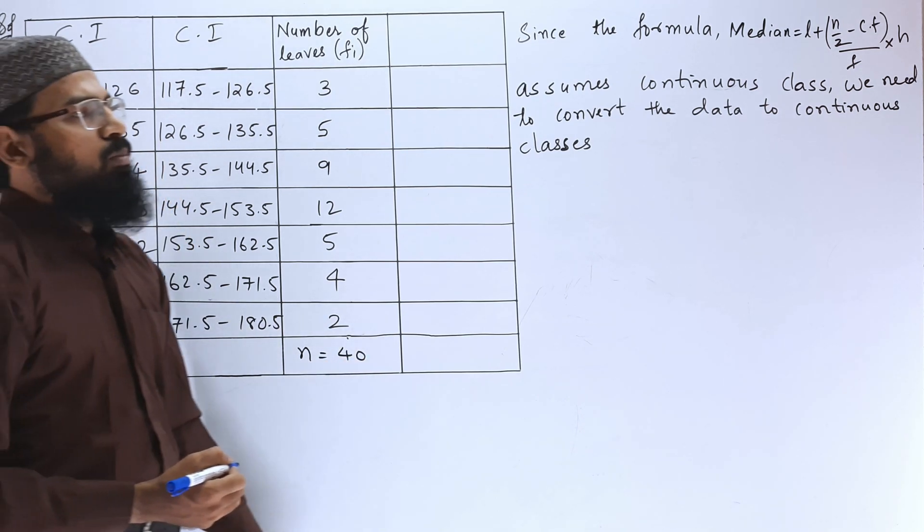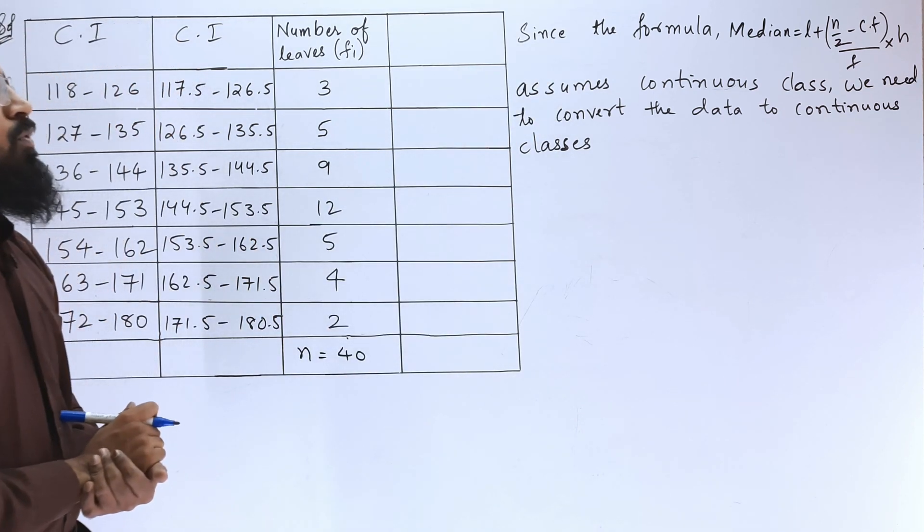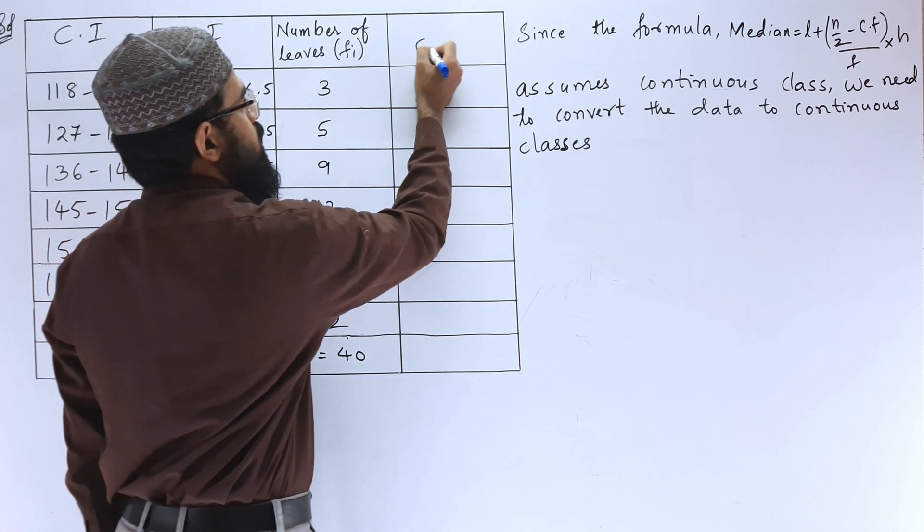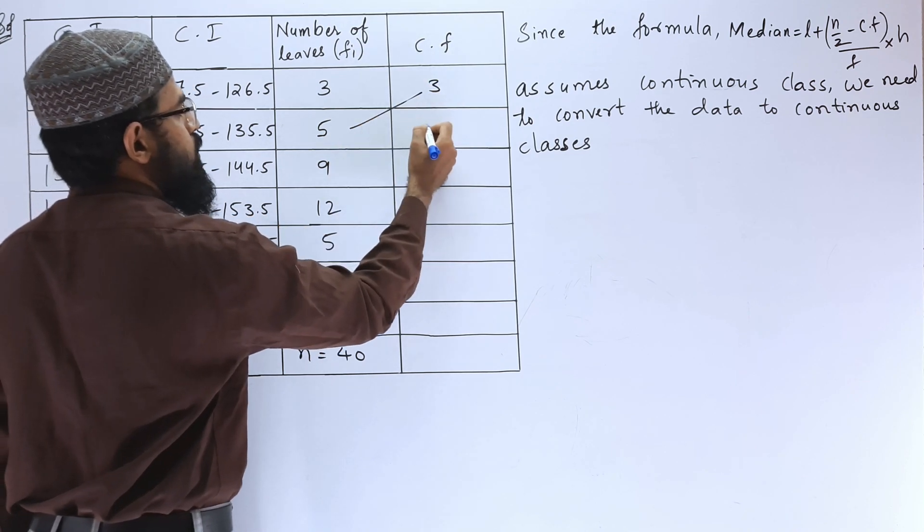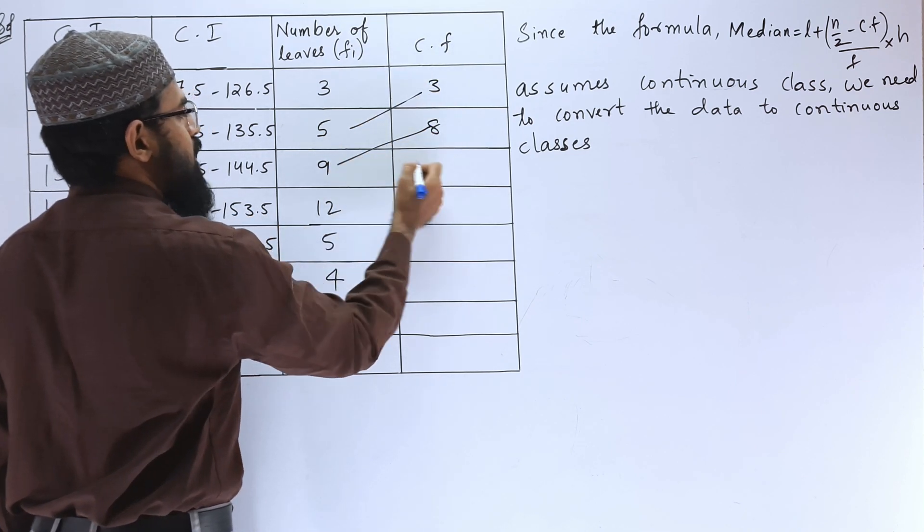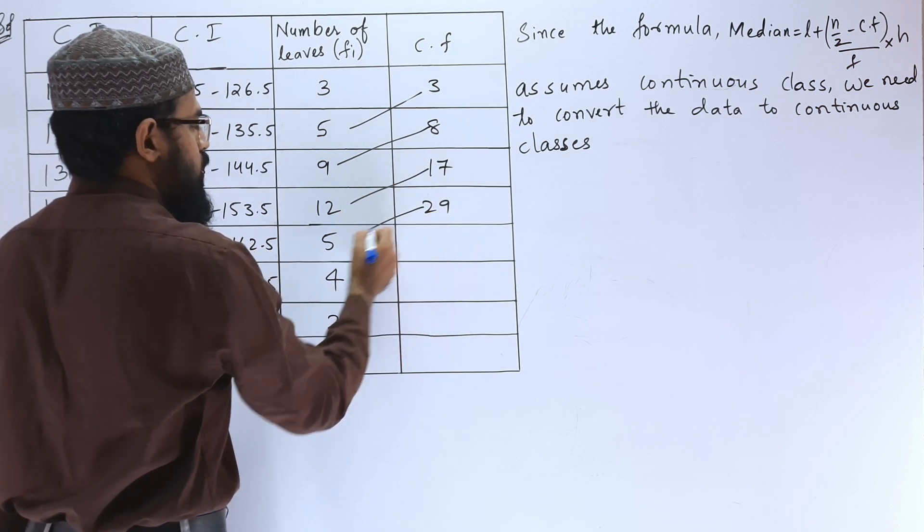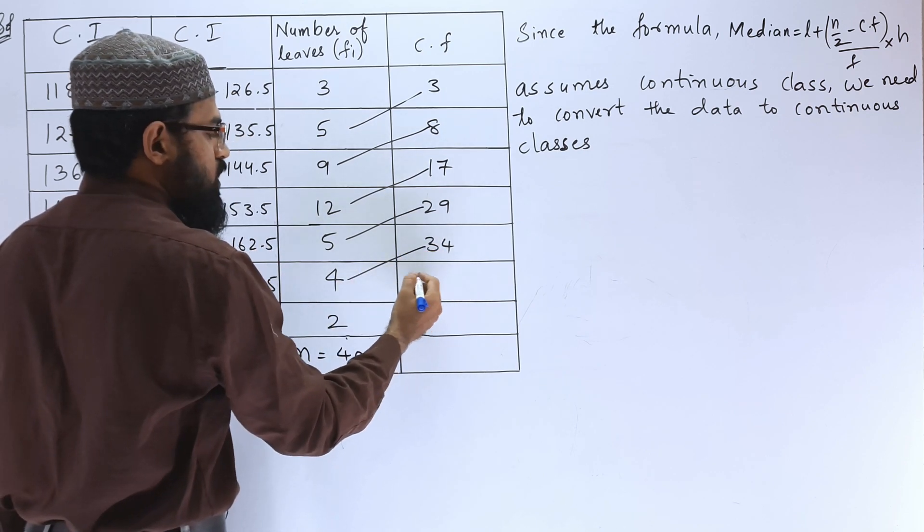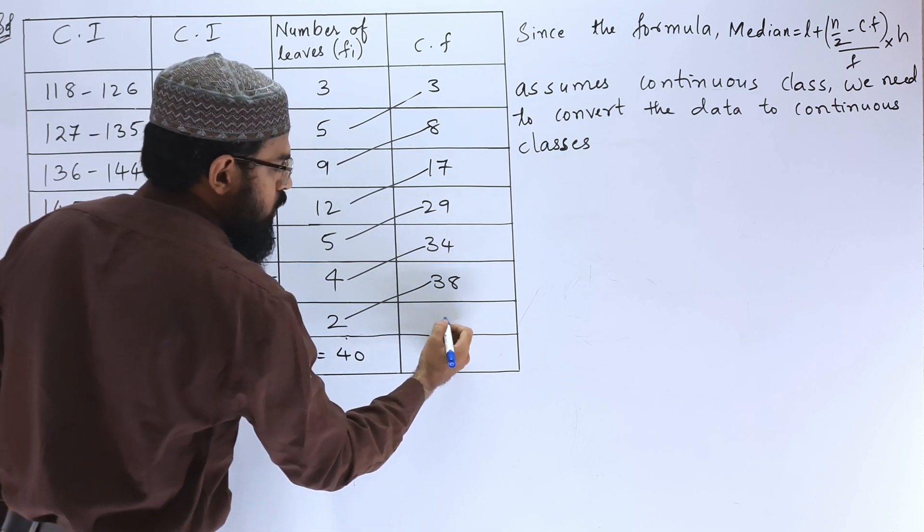Next as per the formula we have to find L. For finding L, let us find out cumulative frequency Cf. So let us write 3 here, 3 plus 5 is 8, 8 plus 9 is 17, 17 plus 12 is 29, 29 plus 5 is 34, 34 plus 4 is 38, 38 plus 2 is 40.